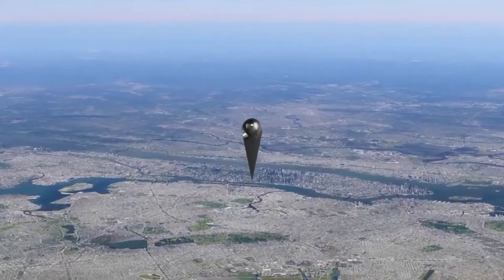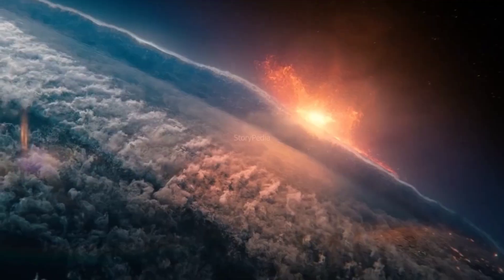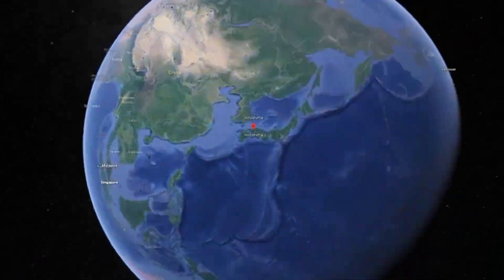Earth faces constant bombardment from various cosmic bodies, most of which go unnoticed as they burn up in the atmosphere. However, occasionally, celestial bodies like the Chelyabinsk meteor or asteroids become visible and make a significant impact.